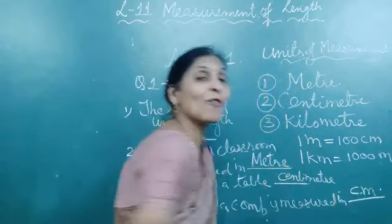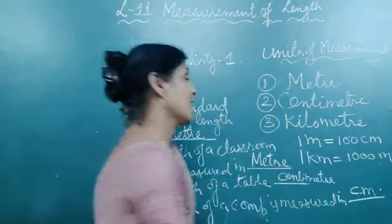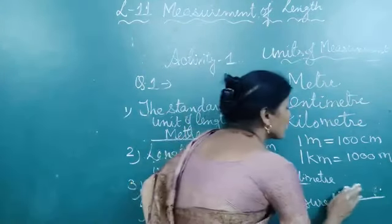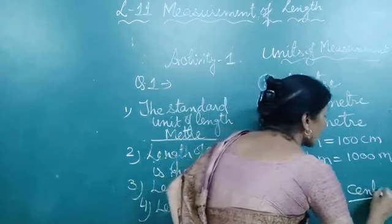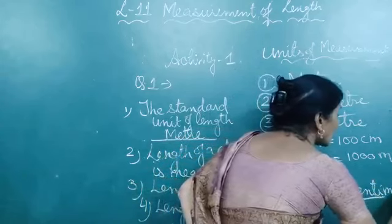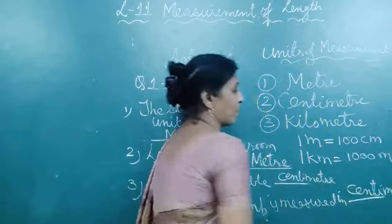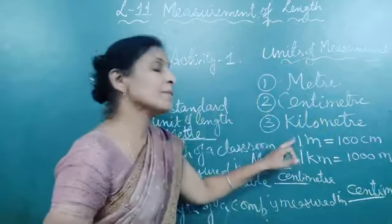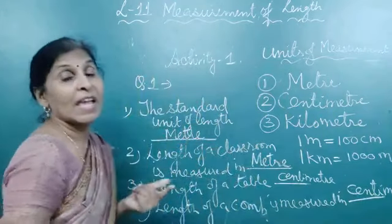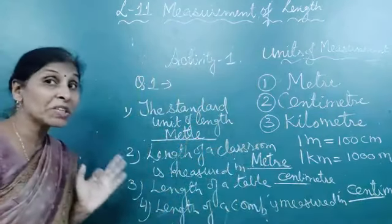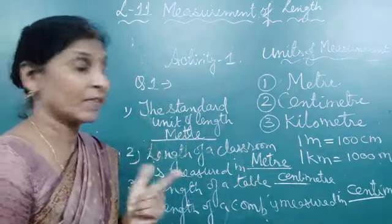The short form of centimeter is CM. We have already told you — the short form of centimeter is CM. Similarly, the short form of meter is M. And the short form of kilometer is KM. Clear?